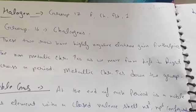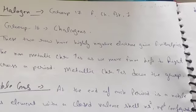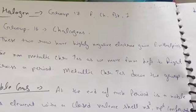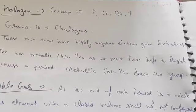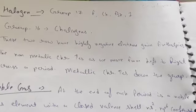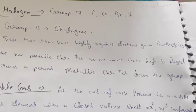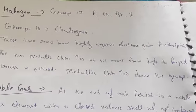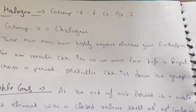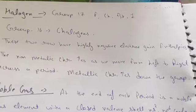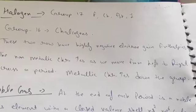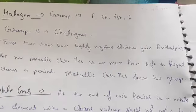Then it says that Group number 16 is given the name chalcogens. These two groups have high negative electron gain enthalpy.